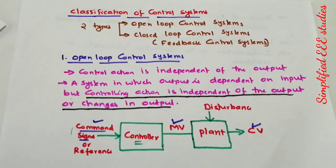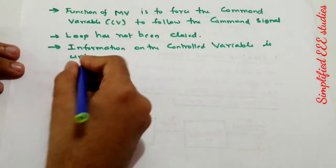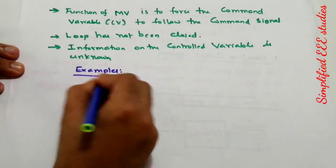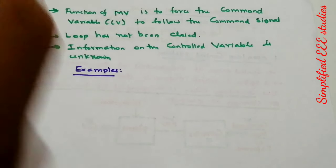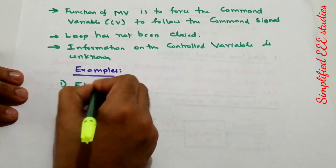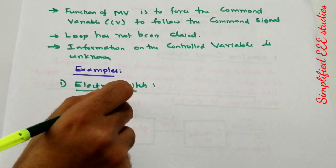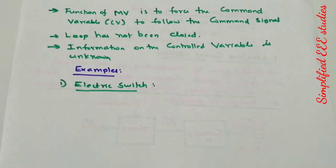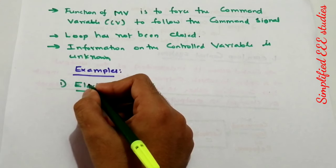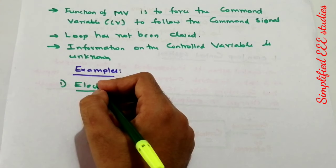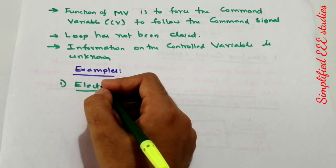Now let us look at examples of open loop control systems. The first one is an electric switch. Any changes in the light have no effect on the on or off position of the switch and its controlling action. We turn the switch on or off, but we do not know whether the bulb is healthy or not — the controlling action is entirely independent of the light.